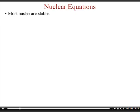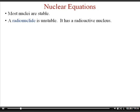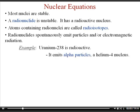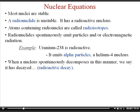Most nuclei are stable. A radionuclide is an unstable nucleus with radioactive characteristics, and atoms containing radionuclides are called radioisotopes. Radionuclides spontaneously emit particles when their nucleus breaks apart, and they can also emit electromagnetic radiation in the form of gamma rays. For example, uranium-238 emits alpha particles — a helium nucleus containing two protons and two neutrons. When a nucleus decomposes this way, it has undergone radioactive decay.